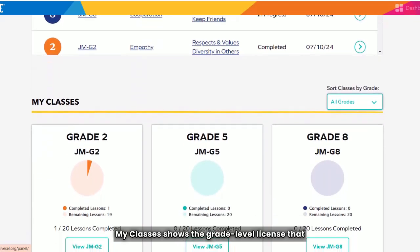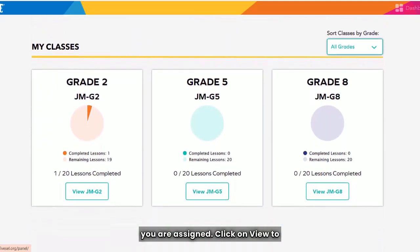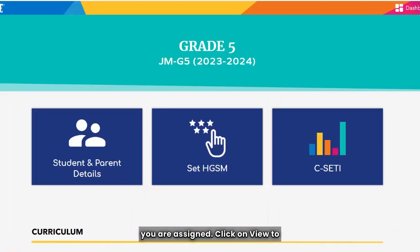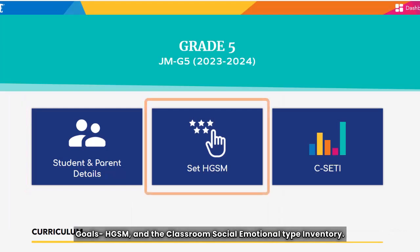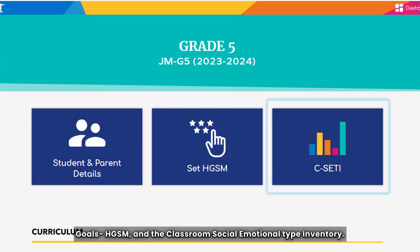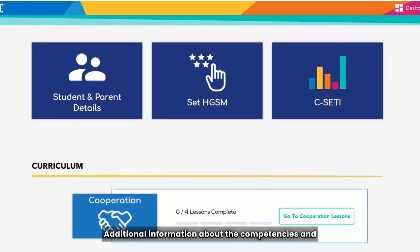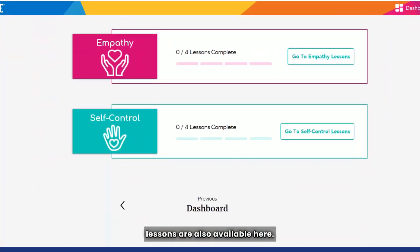My Classes shows the grade-level license that you are assigned. Click on View to access the Student and Parent Details, Hopes and Goals, and the Classroom Social Emotional Type Inventory. Additional information about the competencies and the option to click into specific lessons are also available here.